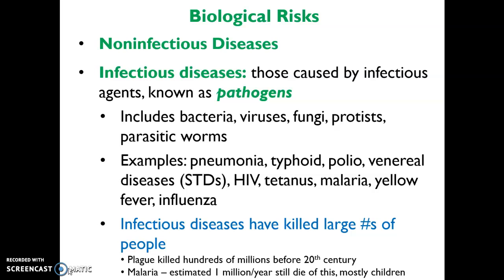Malaria is a mosquito-transmitted disease, and it's estimated that about a million people per year die from it — most of them children ages five and younger. More recent CDC data from 2018 shows 228 million people were infected with malaria, and of those, 405,000 died that year. Compared to diseases like SARS or COVID-19, the numbers for malaria and plague are actually staggering. We'll also look at the Spanish flu of 1918 and the staggering number of people infected and who died in the U.S. and elsewhere.